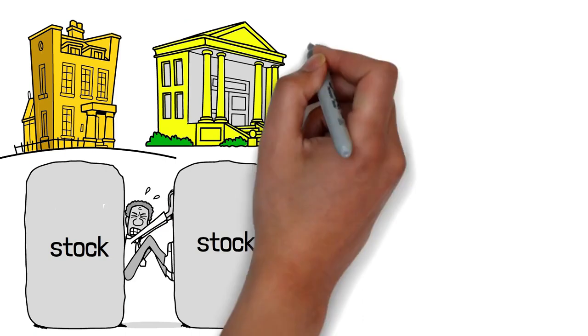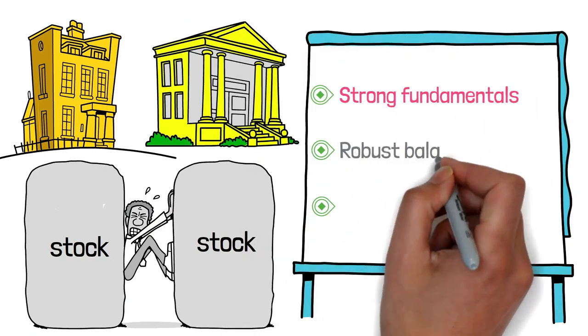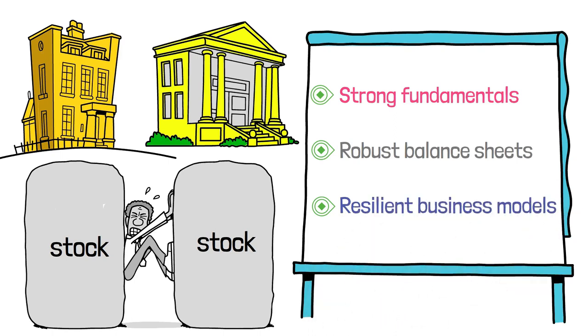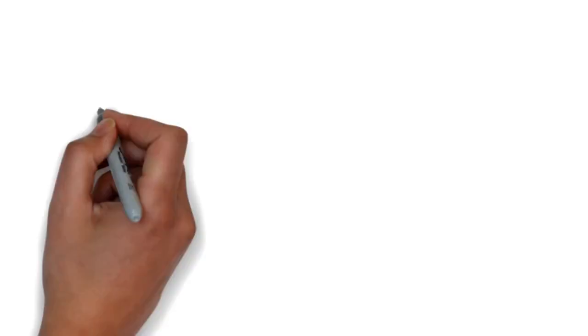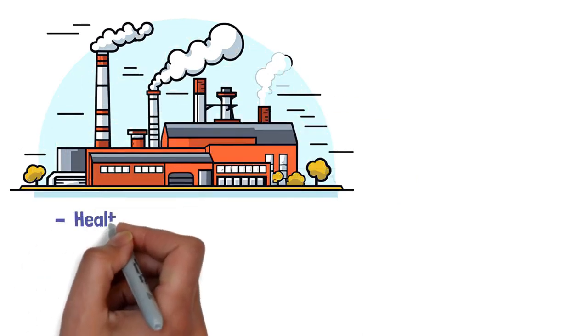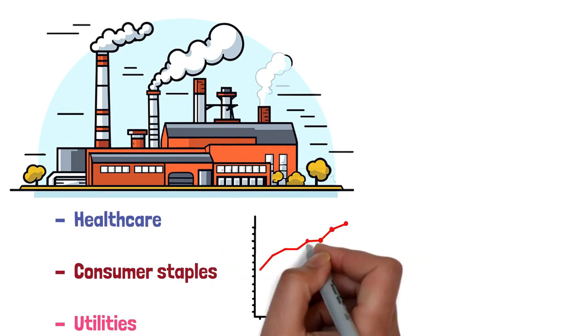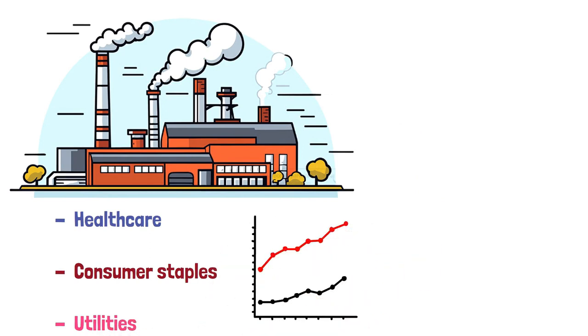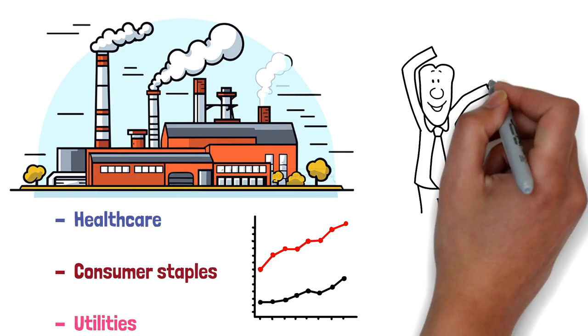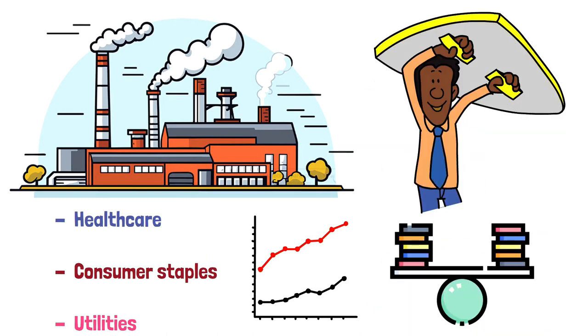Instead, investors should focus on identifying companies with strong fundamentals, robust balance sheets, and resilient business models that can weather the storm and emerge stronger on the other side. Industries with defensive characteristics such as healthcare, consumer staples and utilities often prove resilient during economic downturns, providing a safe harbor for investors seeking stability amidst the chaos.